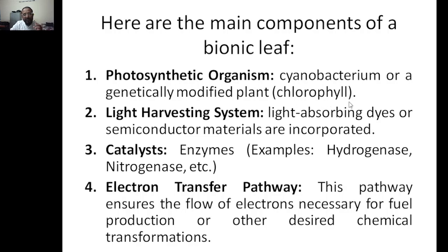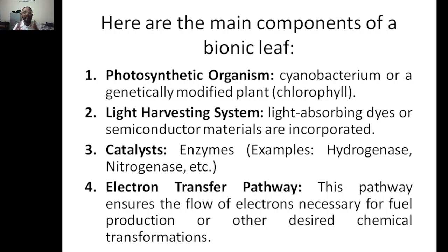Genetically modified plants means you are taking the gene of the plant and modifying it to get a desired property — specifically to get a property like chlorophyll, because chlorophyll is responsible for the absorption of light. So we need a photosynthetic device that absorbs light. The next component is a light harvesting system.